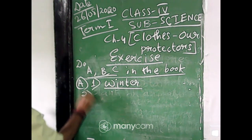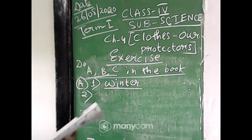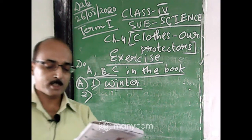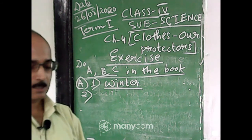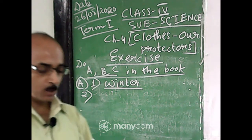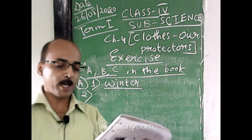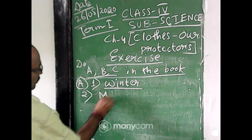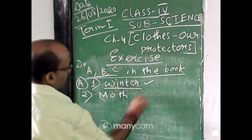Number two: silk and woolen clothes have to be protected from insects like house fly, mosquito, or moth. The answer is moth.